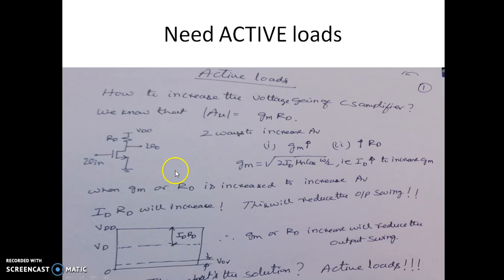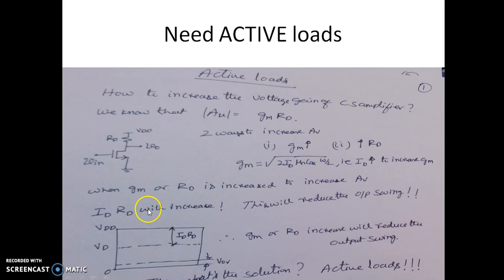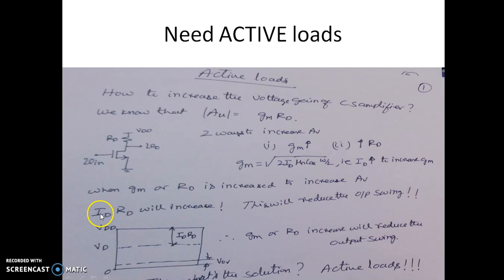When GM or RD is increased to increase the voltage gain, in either case, ID into RD will increase. The increase of GM will take effect only when you increase the value of ID. When you increase the value of RD, this RD will increase. So in either case, the ID into RD drop will increase, which will actually reduce the output swing.